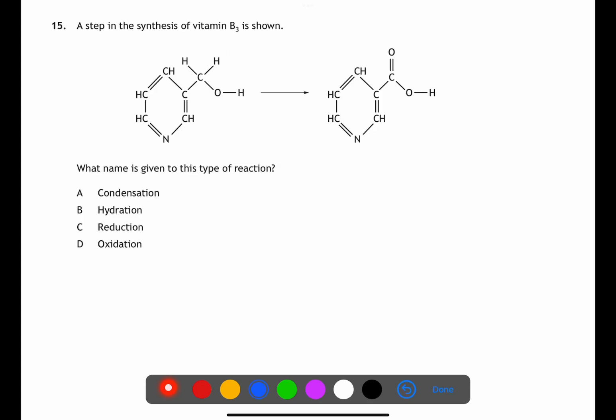For question 15 we're looking at types of reaction. Here we're comparing two different molecules. We can see that the molecule on the left is an alcohol and the molecule on the right is a carboxylic acid. This means we have had an oxidation reaction.